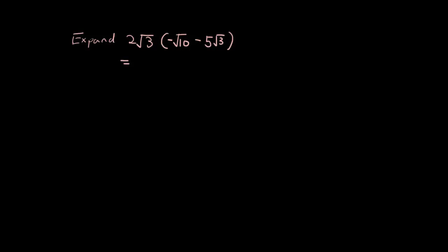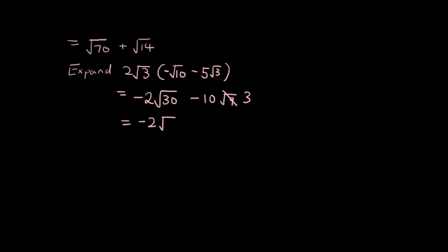Have a go at this one before you watch the answer. I have 2√3 times (−√10 − 5). Multiplying these together I get negative 2 times the square root of 30, and then 2 times negative 5 is negative 10 times square root of 9, and square root of 9 is just 3. So the answer is negative 2√30 minus 30. That is my final answer.